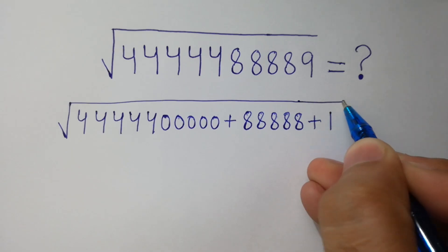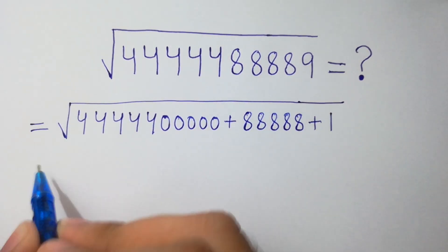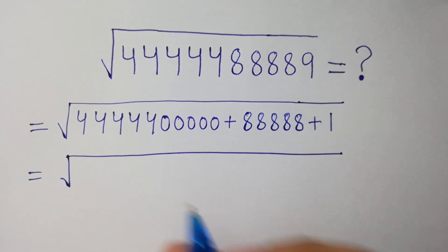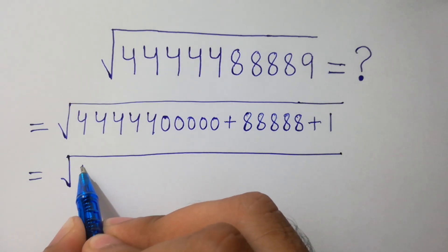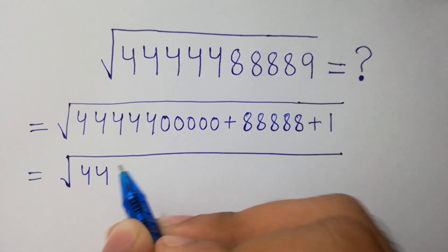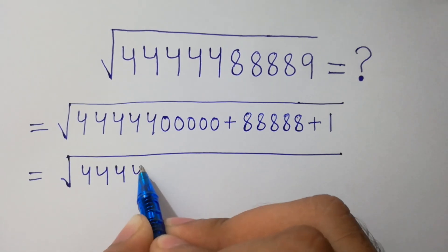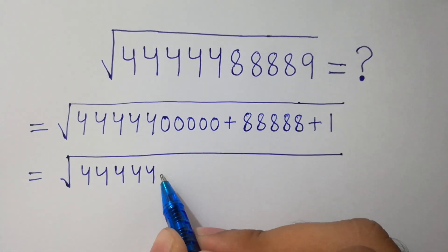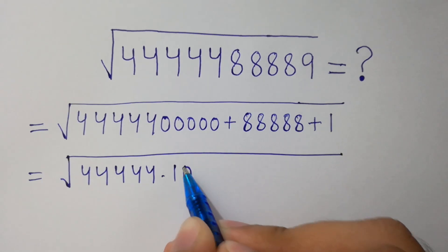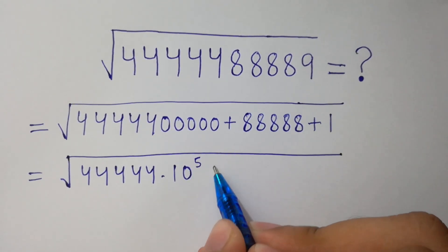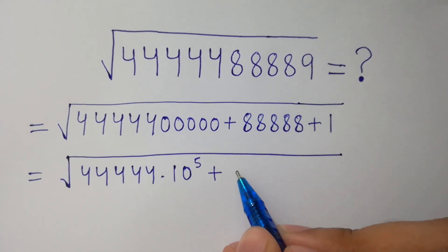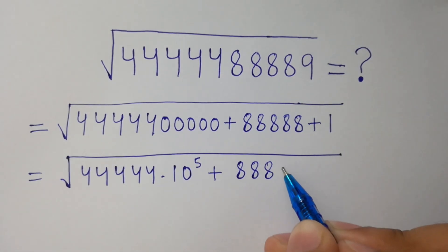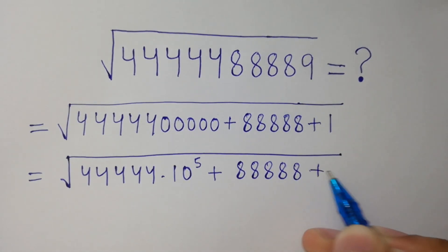Next step: whole fifth root of 4 — 5 times 1, 2, 3, 4, 5 — and 5 times 0 can be written as 10 to the power 5, plus 5 times 8, that is 1, 2, 3, 4, 5 plus 1.